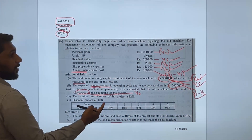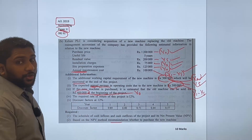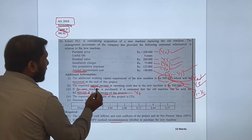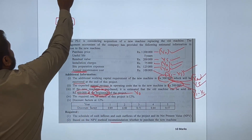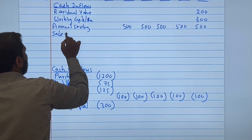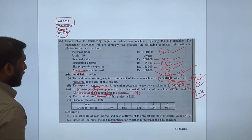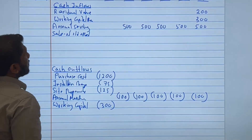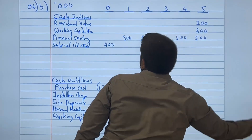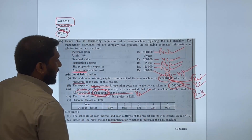Finally, if you purchase the new asset, you can sell the old asset. You will receive 400,000 at the beginning — in year 0 — so this is a cash inflow of 400,000 in year 0. We are now done with all the adjustments.